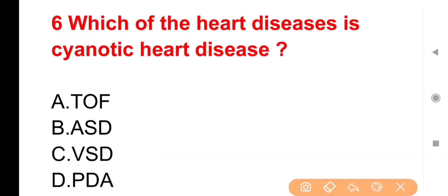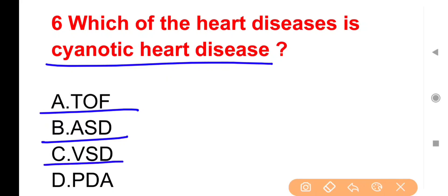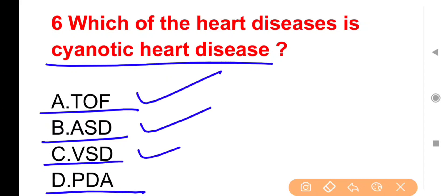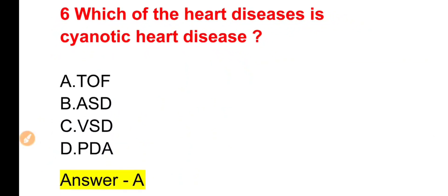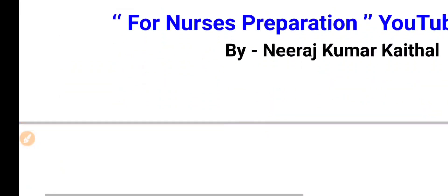Next Question: Which of the following heart diseases is a cyanotic heart disease? Options: TOF (Tetralogy of Fallot), ASD (Atrial Septal Defect), VSD (Ventricular Septal Defect), या PDA (Patent Ductus Arteriosus)। The right answer is Option A — Tetralogy of Fallot. Heart diseases को हम दो categories में classify कर सकते हैं: cyanotic heart disease और acyanotic heart disease।